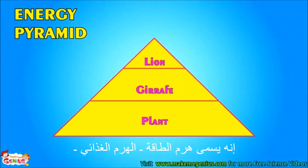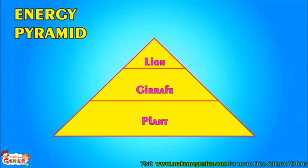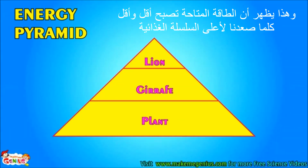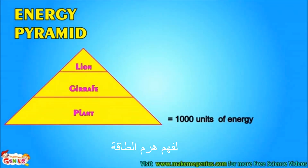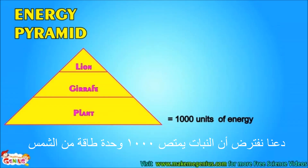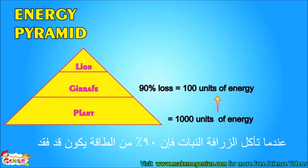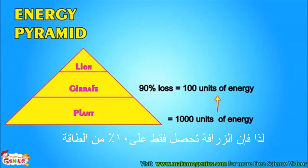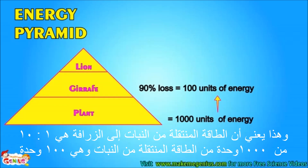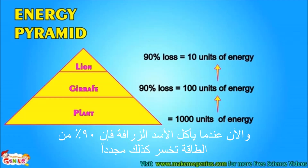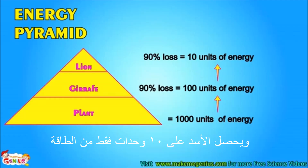Look at this pyramid. It is called the energy pyramid. This shows that the energy available becomes lesser and lesser as we move up the food chain. To understand the energy pyramid, let's assume plants absorb 1,000 units of energy from the sun. When a giraffe eats it, 90% energy is lost, so the giraffe only gets 10% of the energy — that is 100 units. When the lion eats the giraffe, 90% energy is again lost, and the lion gets only 10 units of energy.